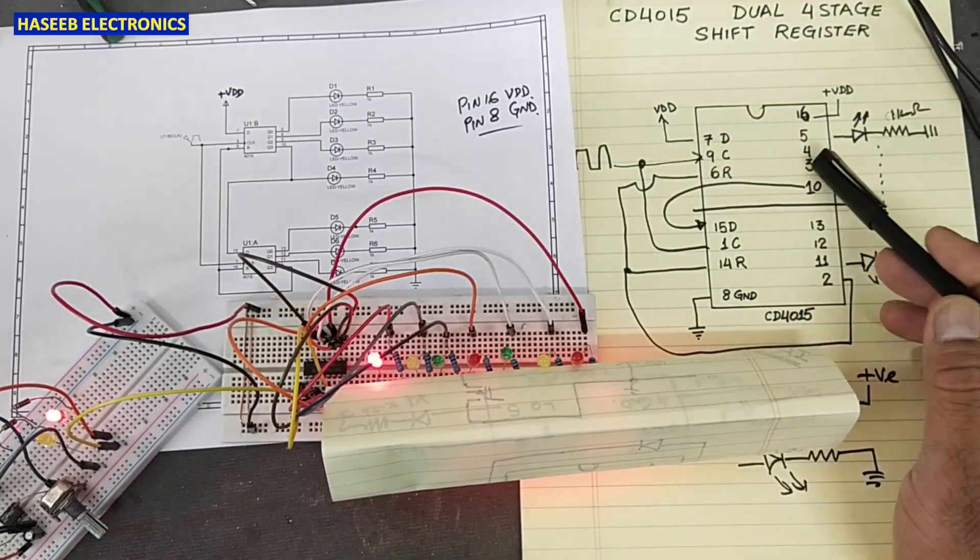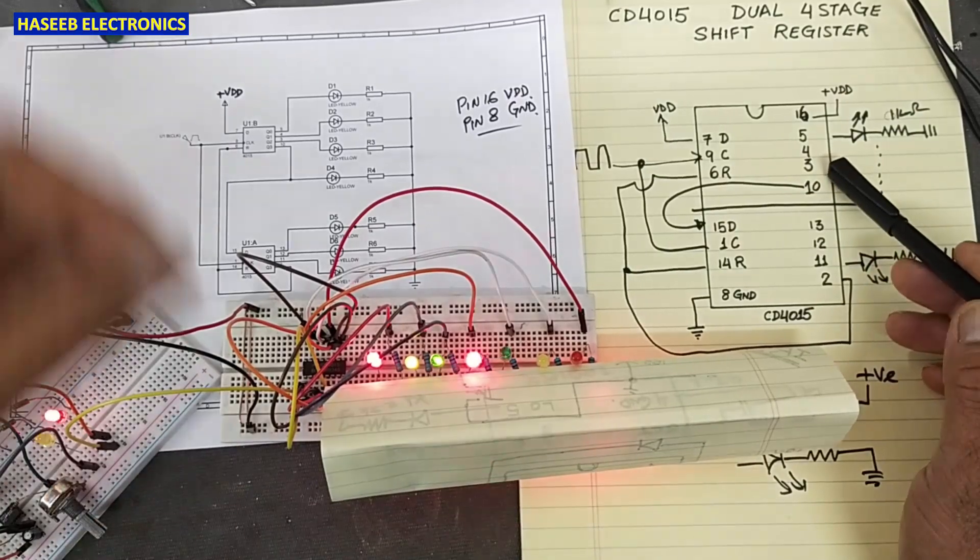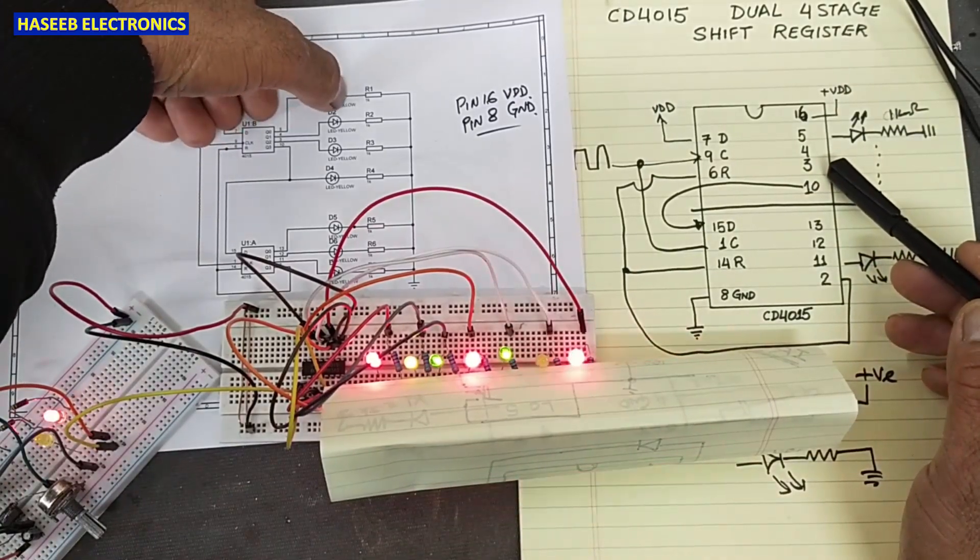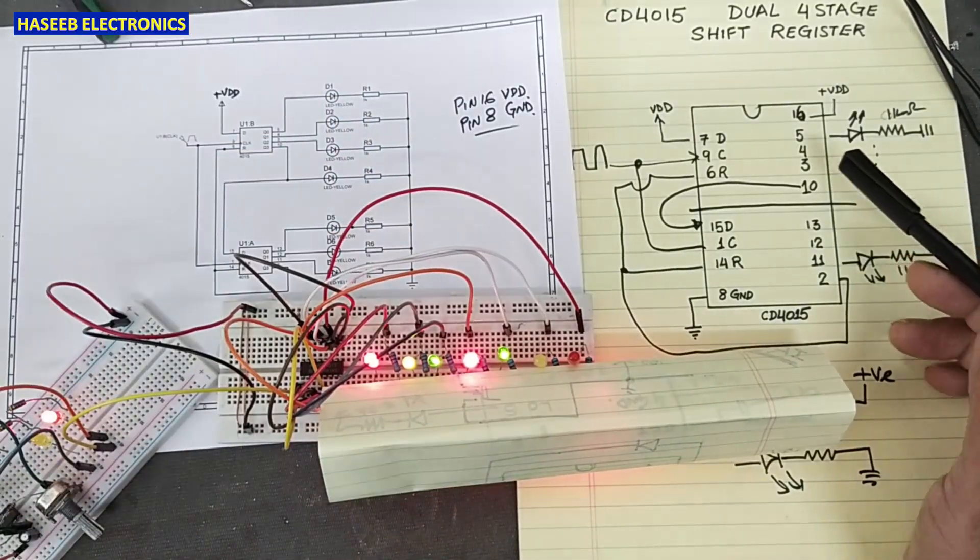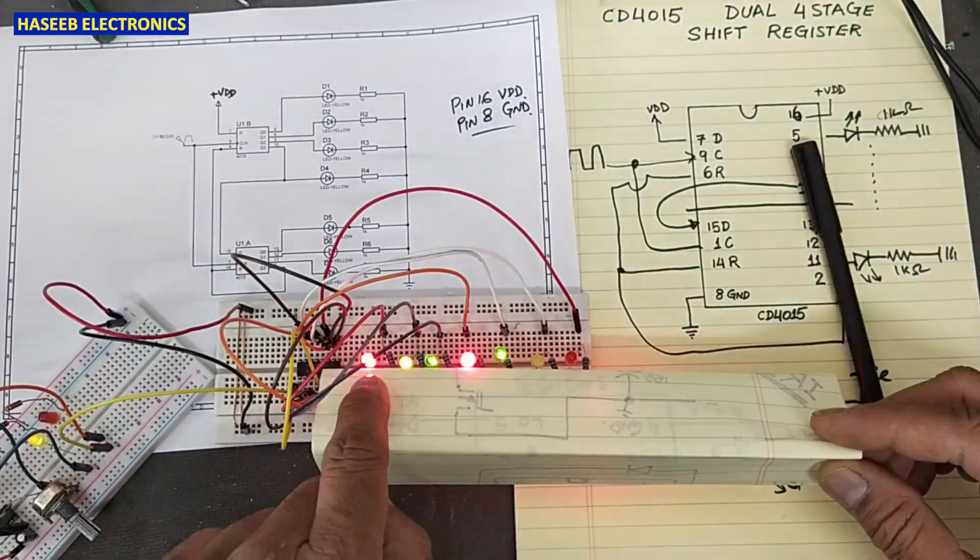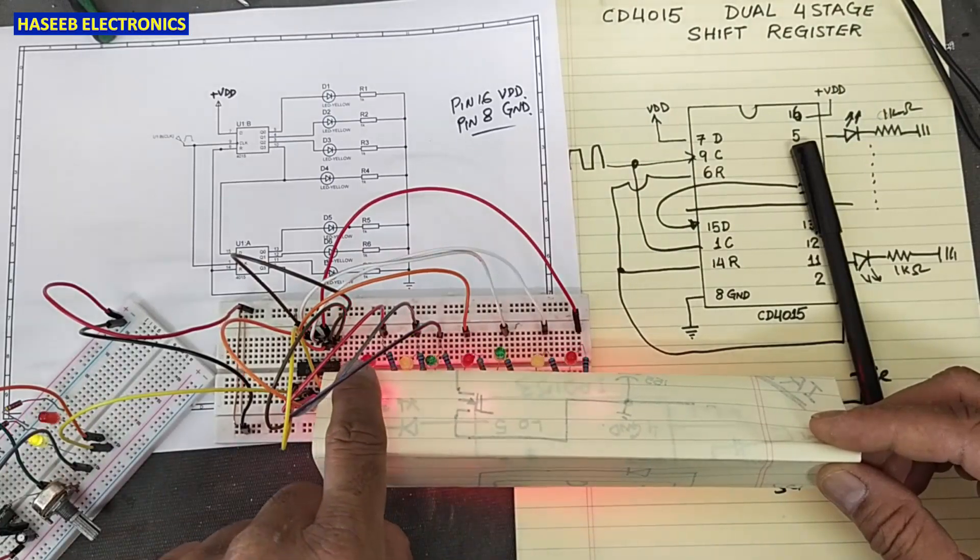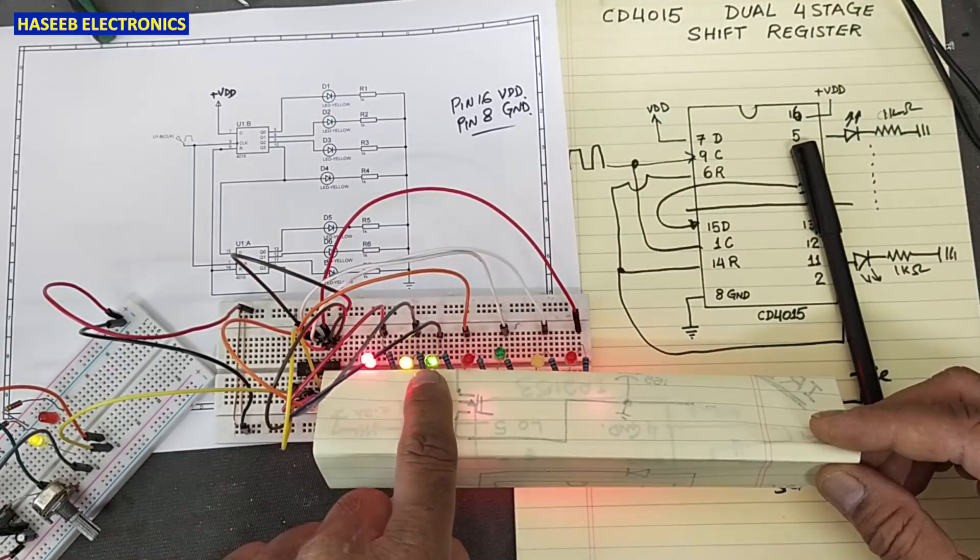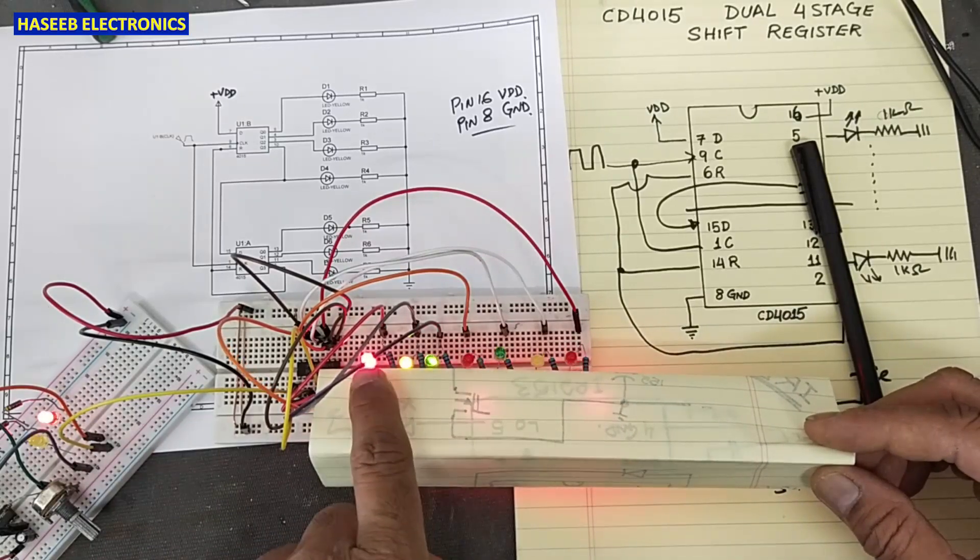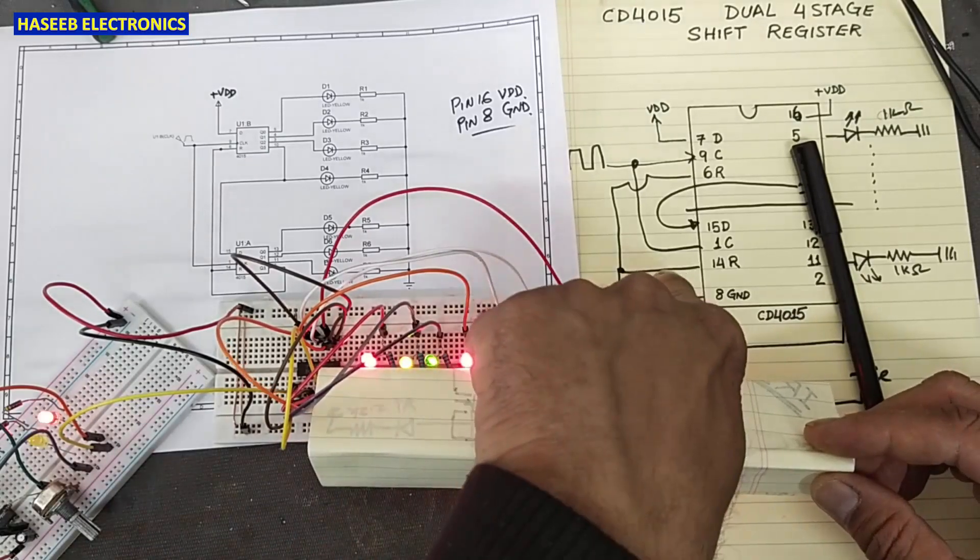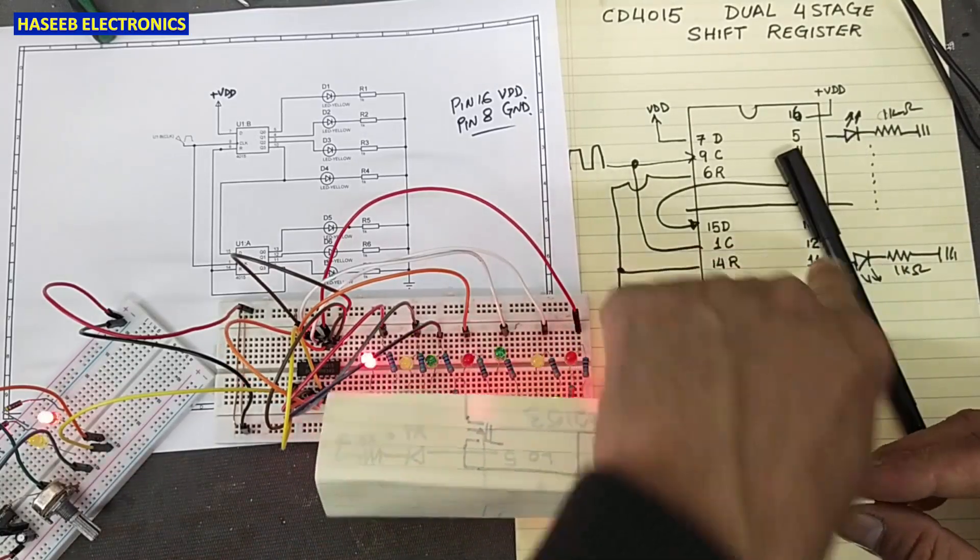When we connect output of this IC to anode and we connect a resistor and second end is connected to ground, this IC will behave in this way. All outputs will low and then it will start increasing step by step, one by one, turning on. When all will turn on, it will reset by reset pulse from pin number two.